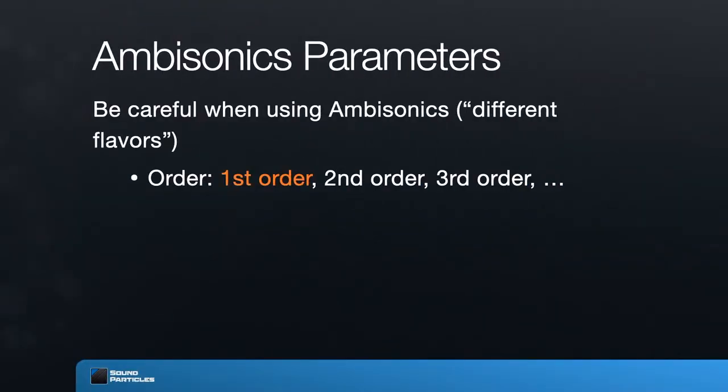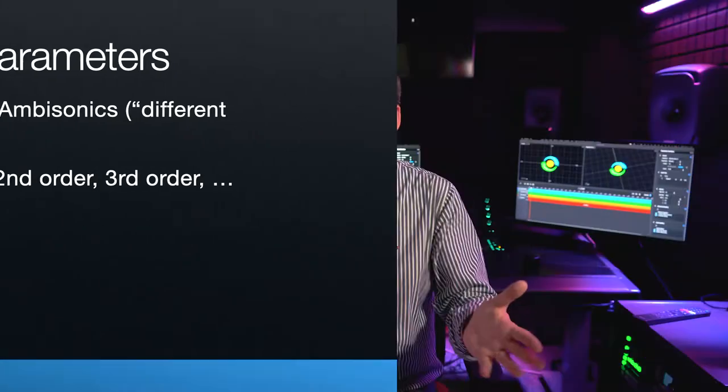Be careful, because there are multiple flavors of ambisonics. Since the technology is now 50 years old, there has been a lot of evolution — initially only first order, then high-order ambisonics. When someone sends you ambisonics, first confirm: which order? First, second, third, fourth? The good news is that by simply looking at the number of channels you automatically know the order: four channels means first order, nine channels means second order, and so on.